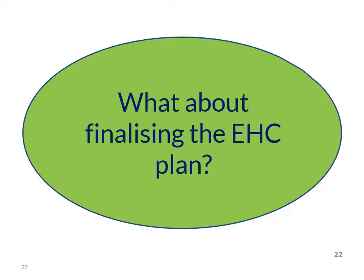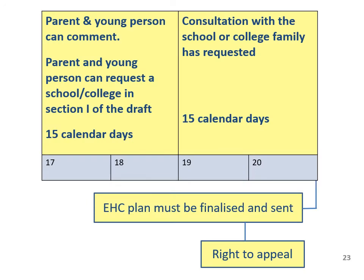So what about finalising the EHC plan? If the local authority decides your child needs an EHC plan, you will receive the draft by week 17. When you receive the draft plan, you have 15 days to go through it and decide if you are happy with it, and you can contact our Sendia service if you would like help. In the draft plan, Section I is left blank — this section is for the name or type of educational setting. It must be left blank so that a parent or someone with parental responsibility, or the young person, can say what setting they would like.